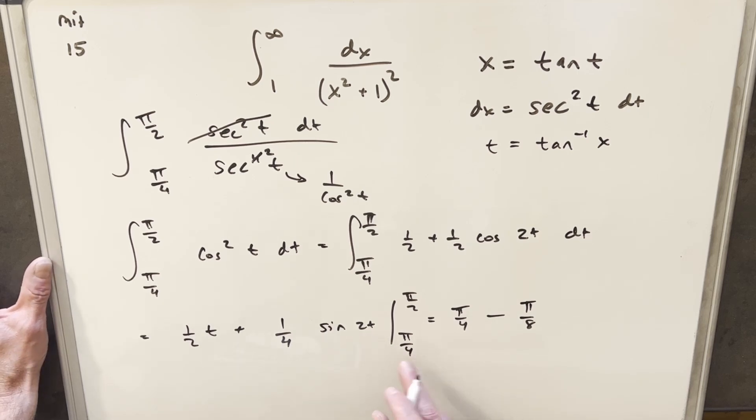π/4 in the sine term: 2 times π/4 is π/2. So sine of π/2 is 1. This is going to be 1 times 1/4, so we have 1/4 there.